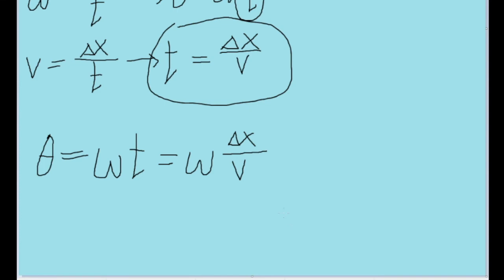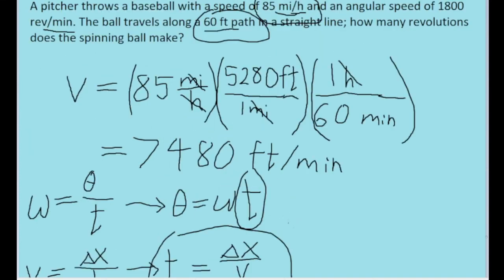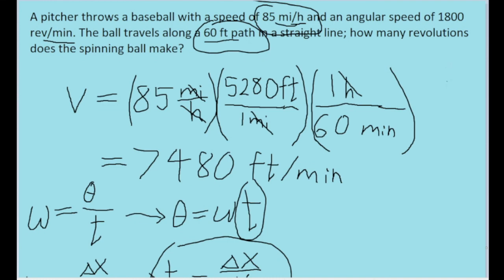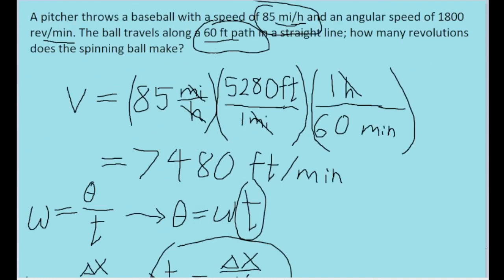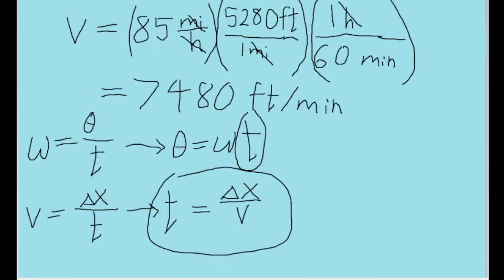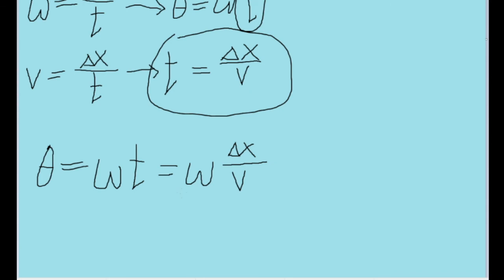So, for example, in the case of the numbers we've been given, we can plug 1,800 revolutions per minute in for omega, 60 feet into delta x, and then 7,480 feet per minute into v. And so, if we plug those numbers into a calculator, we will find that the number of revolutions is equal to approximately 14.4. And that is the number of revolutions that the ball takes.